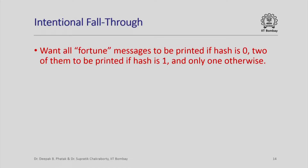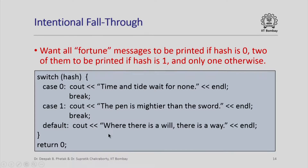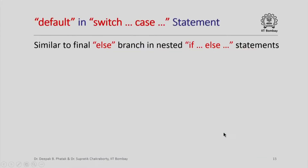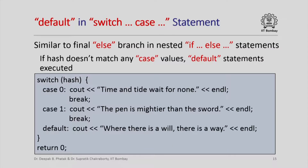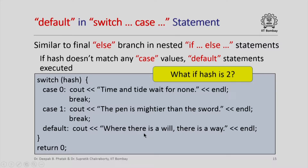Fall-through can also be used intentionally. Suppose we want all three fortune messages printed if hash is 0, only two if hash is 1, and only one if hash is 2. If we remove the two break statements: when hash is 0 all three messages print due to fall-through; when hash is 1 the last two print due to fall-through; otherwise only the default statement prints. The default in a switch case statement is really similar to the final else branch in nested if-else statements — if the value of hash does not match any case value, the default statements are executed.